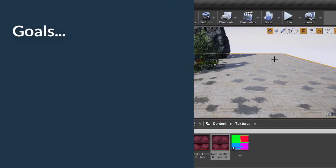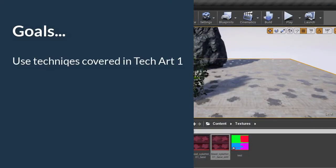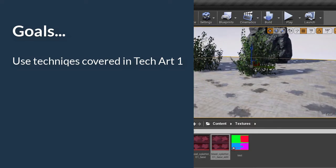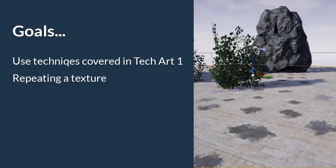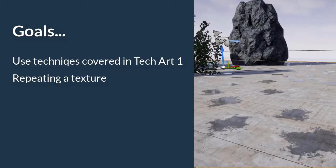In this module, we'll be taking everything that we've learned from the first module and putting it into practical use. The goal here will be to create a procedural texture splatting material, which will apply a texture to a surface.